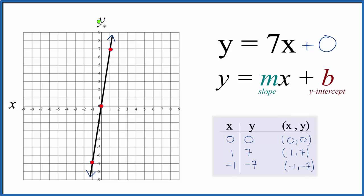We come over here on the y-axis and we find 0. That's where the line should go right through the y-axis. And there's 0. That's our y-intercept.